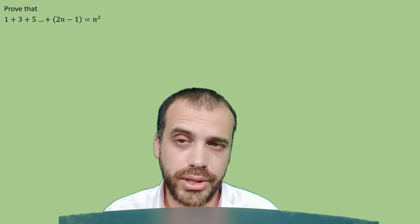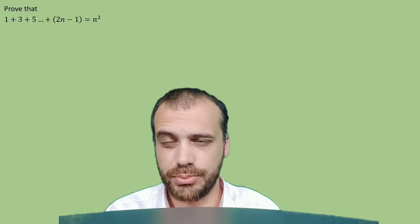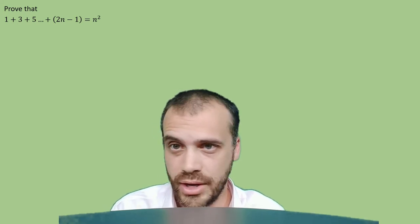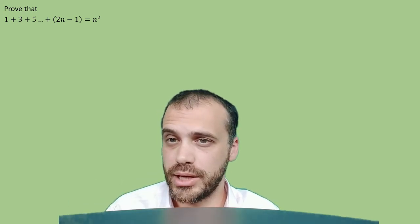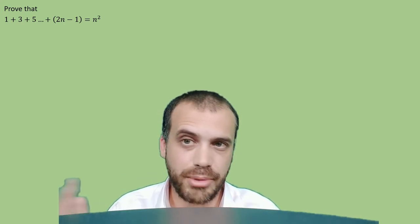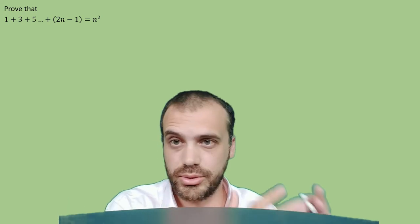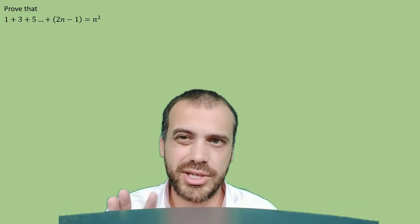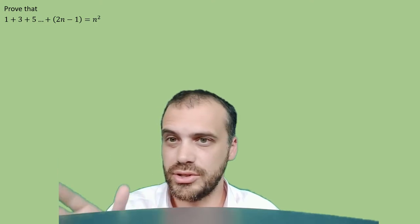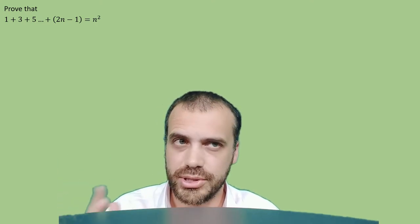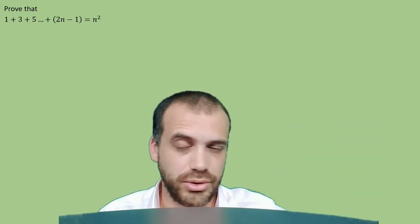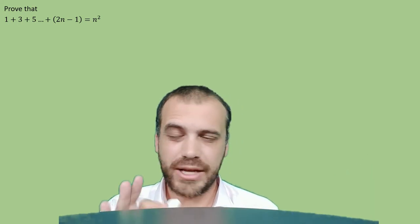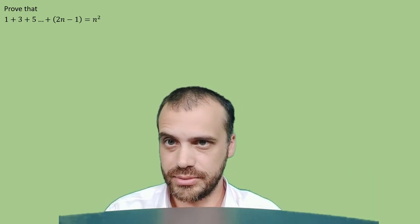We're going to use proof by mathematical induction to prove that 1 plus 3 plus 5, and so on, all the way up to 2n minus 1 is equal to n squared. The sum of some amount of odd numbers equals that square number. You can see it seems to work: 1 plus 3 plus 5 is 9, a square number; 1 plus 3 plus 5 plus 7 is 16, also a square number. But it might not work all the way up to the largest odd number you can think of — that's where proof by mathematical induction comes in.